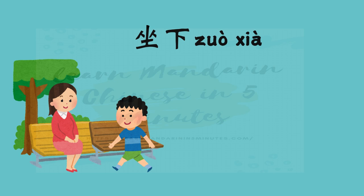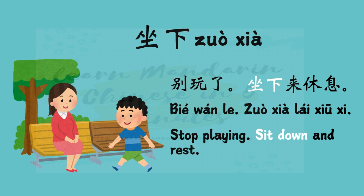When you want someone to sit, you can say 坐下 in Chinese. 坐 means to sit. 下 is down, so 坐下 means sit down. Sentence example: 别玩了,坐下,来休息. Stop playing, sit down and rest.